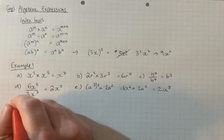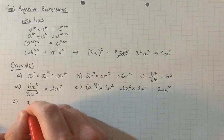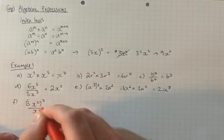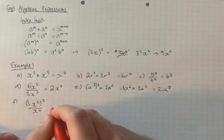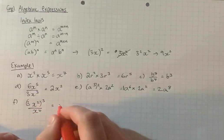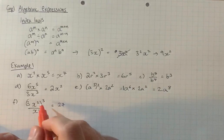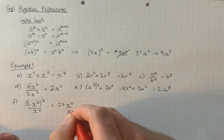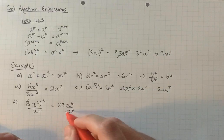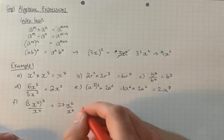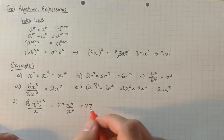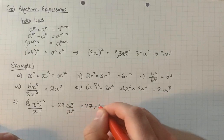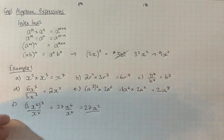Now f. 3x squared cubed over x to the 4. Let's deal with the bracket first. You've got 3 cubed is 27. x squared cubed times these together is x to the 6. There's no coefficient on the denominator, so it's just going to be 27. And then using the division rule, subtract the powers. 6 take 4 is 2.